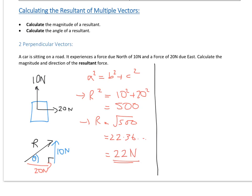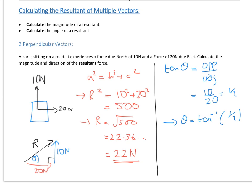Now let's calculate theta. Since it's a right-angled triangle, we use SOHCAHTOA — tan theta equals opposite over adjacent, which is 10 over 20, so it's a half. Therefore theta equals the inverse tan of a half, which gives 26.56 degrees, or 27 degrees to two significant figures. By drawing the diagram we can show the direction of travel: an angle theta of 27°, and the magnitude R of 22 newtons. We could replace those two separate forces with this single resultant.